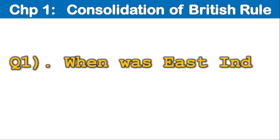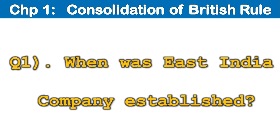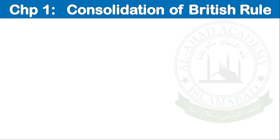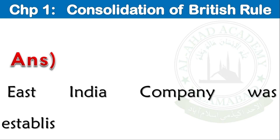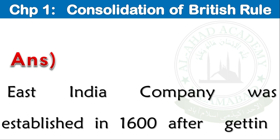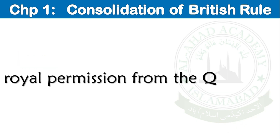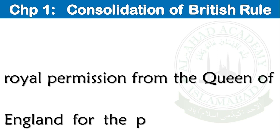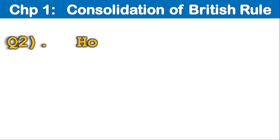Question number 1: When was the East India Company established? Answer: The East India Company was established in 1600 after getting royal permission from the Queen of England for the purpose of trade.